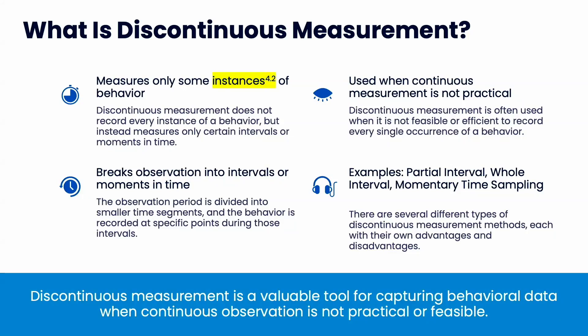We use this because we only want to measure some instances of behavior — it's just a lot easier. It breaks our observations into moments or time segments, and we're looking at whether behavior occurred within that small time interval or not. This is used when continuous measurement is not practical — really high frequency behavior, you have to do other things, or you want to observe many people at once. For example, behavior techs doing therapy will also take interval recording every five minutes; it helps track behavior throughout the session without being as time intensive as frequency or duration.